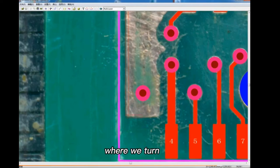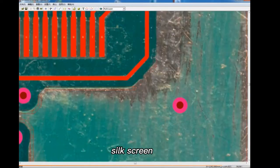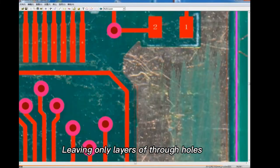So we press layer settings, where we turn off the display of the top layer of wiring and silkscreen, leaving only layers of two holes.